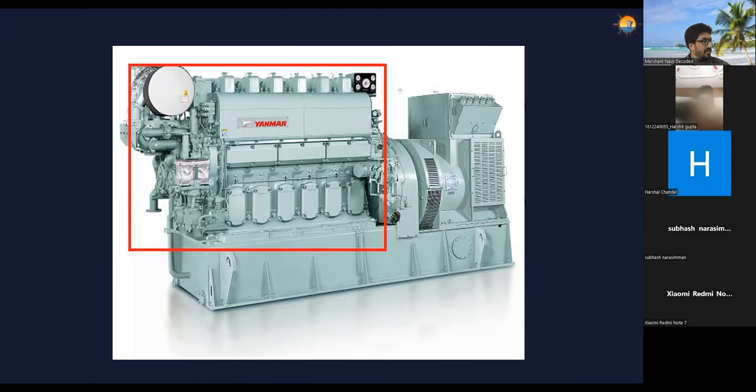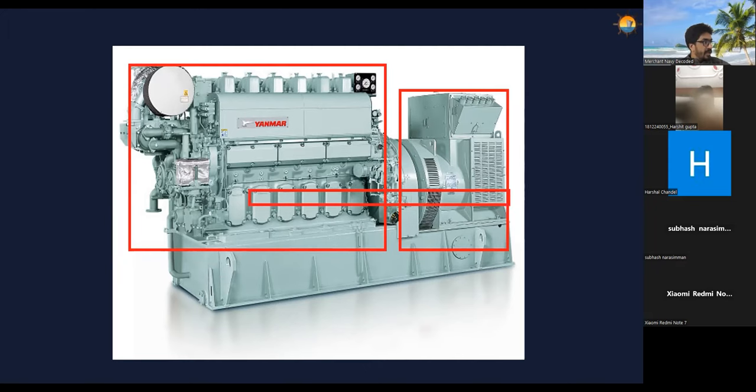And this part is called alternator, three-phase 440 volts output. And there is a shaft inside. So it's coupled basically, they are coupled together. The diesel engine is a prime mover which is moving the rotor part of the alternator.